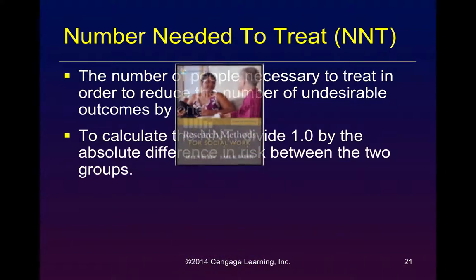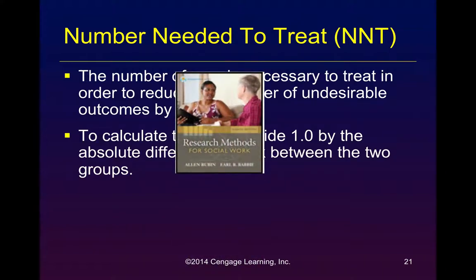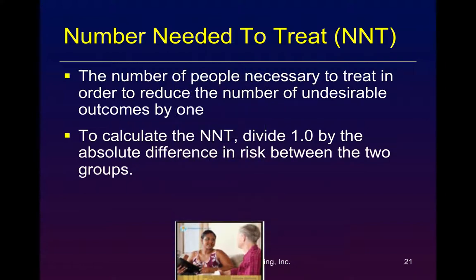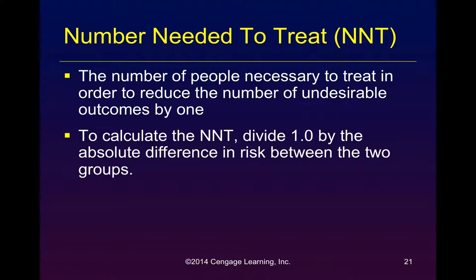There is something new in the 8th edition that was not in the 7th edition. The number needed to treat is a very useful and practical calculation — it will tell you how many individuals you will have to provide an intervention to in order to get a single effective outcome. Program administrators use this kind of tool.